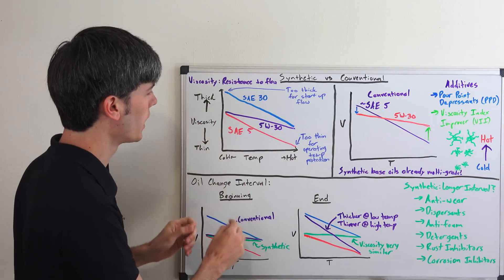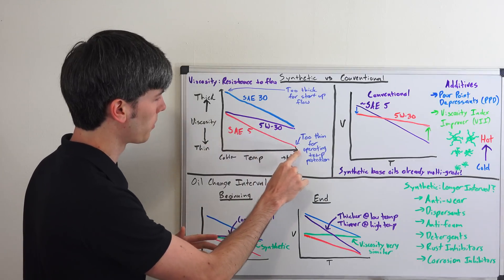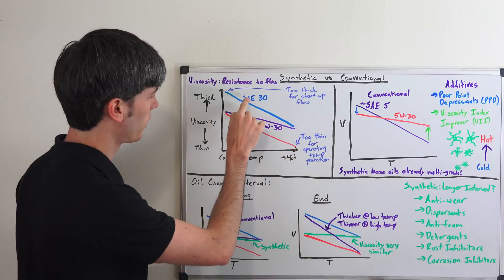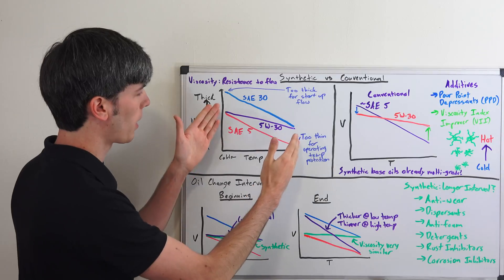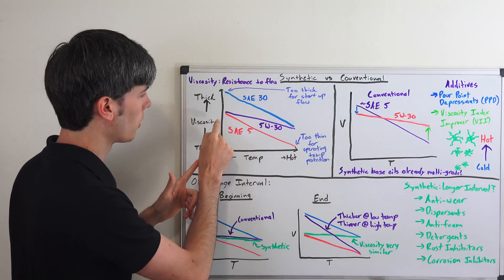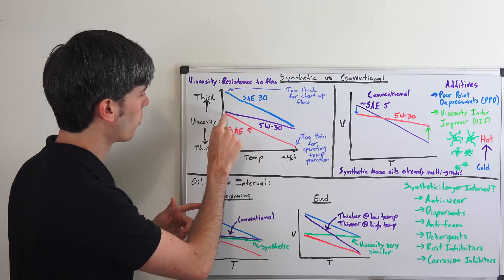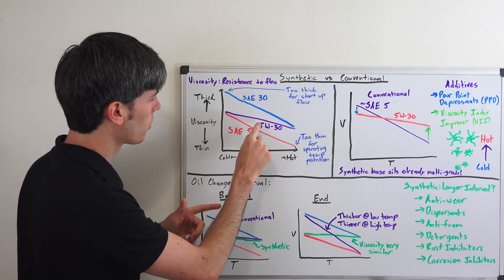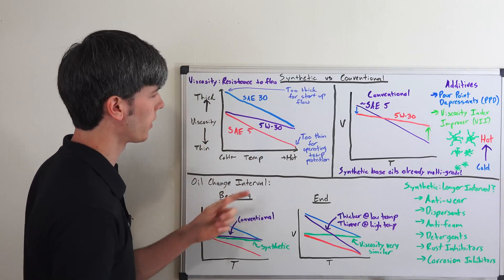And so when you're looking at this if you were to plot an SAE 5 straight grade oil it would look something like this, you know a thinner viscosity than an SAE 30 straight grade oil. And then a multi-grade viscosity is going to have properties of both of these. So at lower temperatures it's going to act like an SAE 5 weight oil but as you can see it's still going to thin out as it gets to hotter temperatures where it acts like an SAE 30 grade oil.